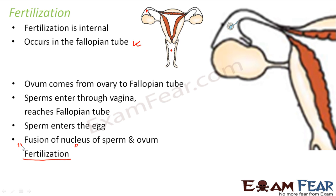One matured egg gets released from the ovary every 28 days. The question is: will the unfertilized egg remain alive until the next egg is released? No, it is not like that. The lifespan of an egg is very small — from the time the egg is released from the ovary, it will remain alive for only 24 hours. If no sperm fertilizes it within 24 hours, the ovum will degenerate.